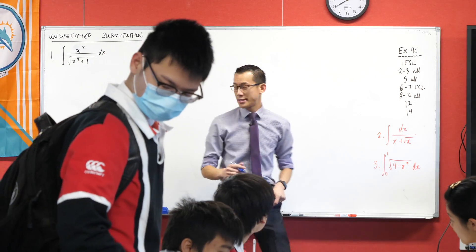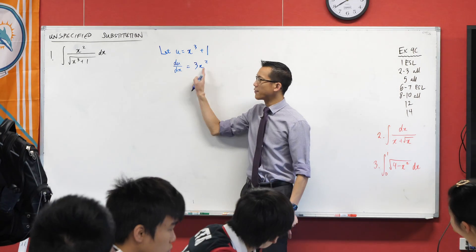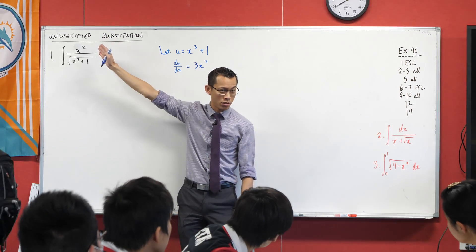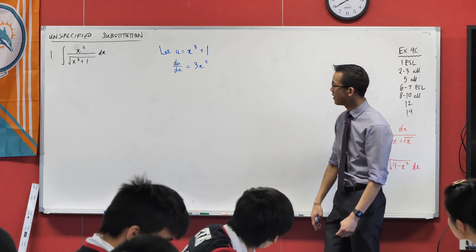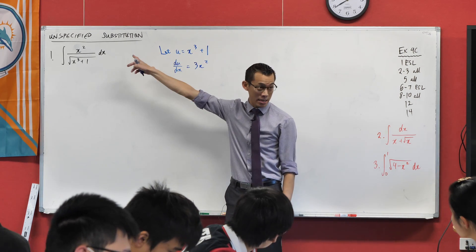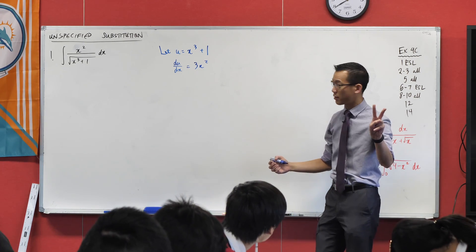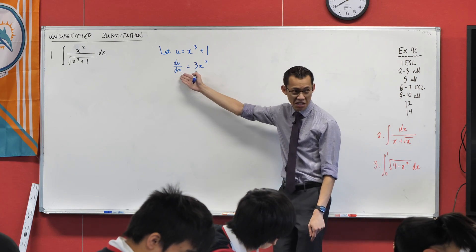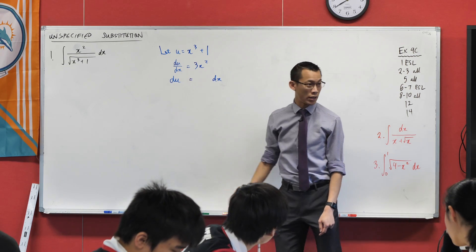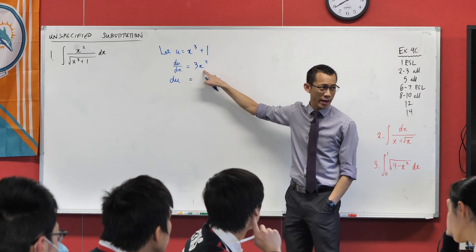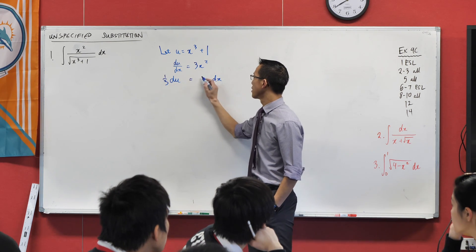Here's one way that we can set this up. I've got a du on dx here, I've got a 3x squared here, and I can see several of these components. One of the ways that's going to make this easy for me is to try and get the dx and the x squared, which I see in my integral, to appear together. In this case, that means two things: I'm going to multiply both sides by this dx, and at the same time I'll divide both sides by 3.